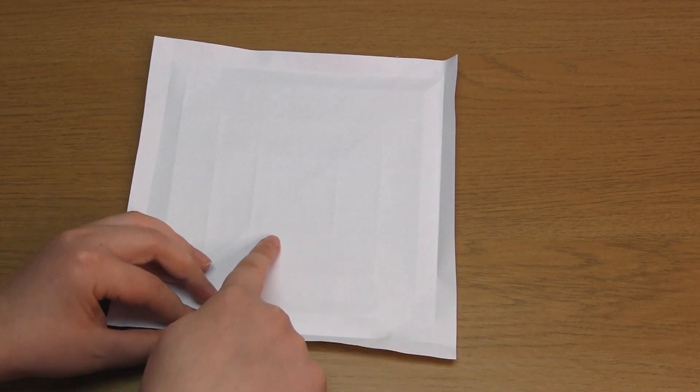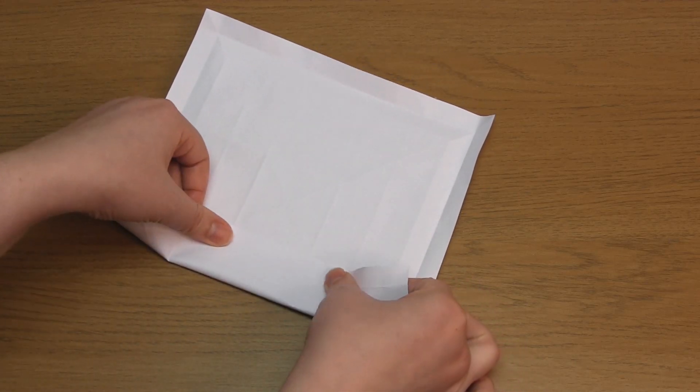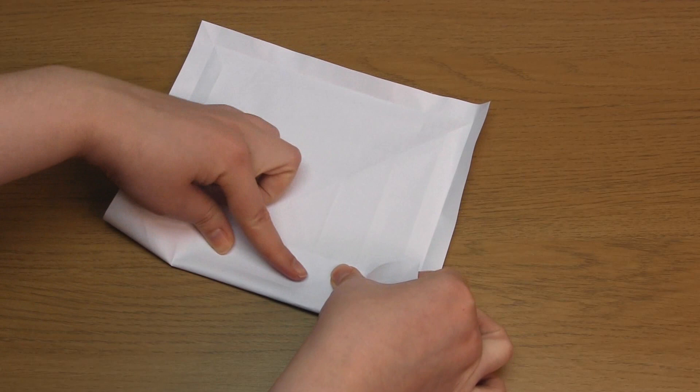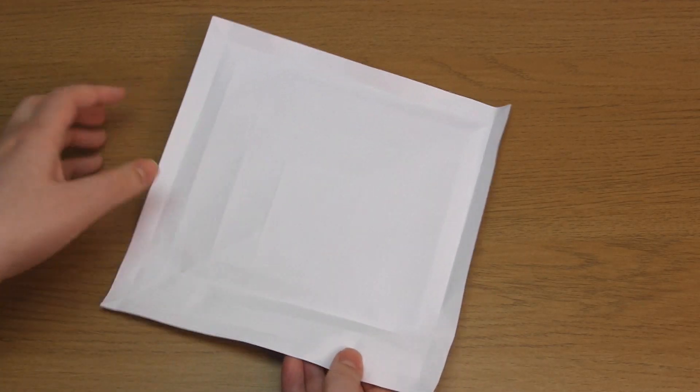Next, fold the bottom edge over and this time line it up with the fold that's just this side of the center point. Remember to only crease the paper between the diagonal folds. Then repeat this on every side.